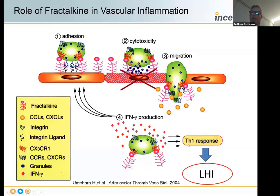Non-classical monocytes bind through fractalkine—a protein expressed by endothelial cells—through a receptor called the fractalkine receptor or CX3CR1. When they bind and migrate through the endothelium, they cause inflammation and produce Th1 cytokines, specifically interleukin-2 and interferon gamma. Our AI identified interleukin-2 plus interferon gamma as the numerator of our long hauler index, years after this mechanism was described in the literature.